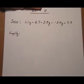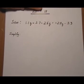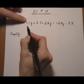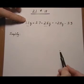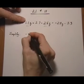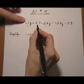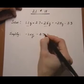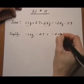So we have 1.1Q minus 2.5Q on the left side, and that gives us minus 1.4Q. Just bring down the minus 2.7 equals. There's nothing to simplify on the right side, so we just write it down minus 2.4Q minus 3.3.